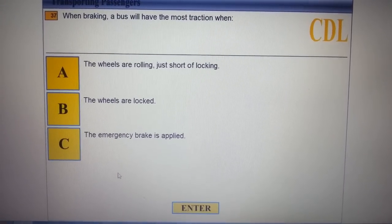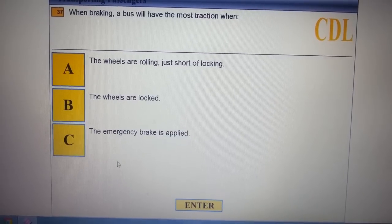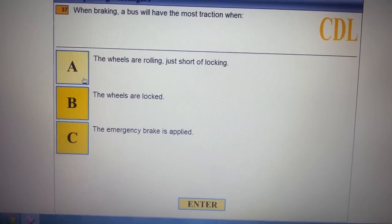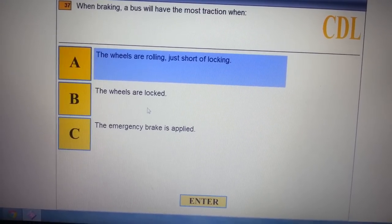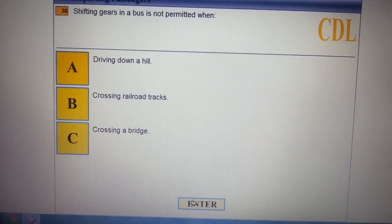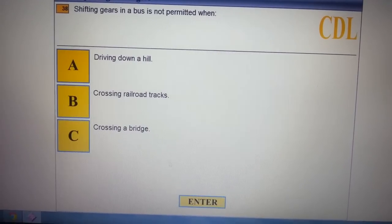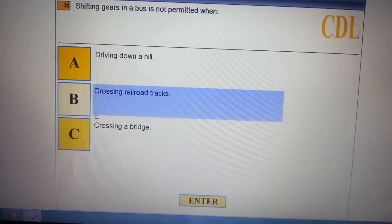When braking, the bus has the most control when you're not wheel-locking. Shifting your gears is not permitted when crossing railroad tracks.